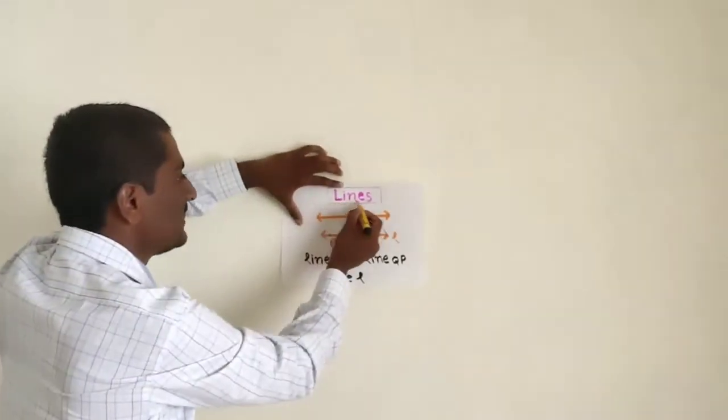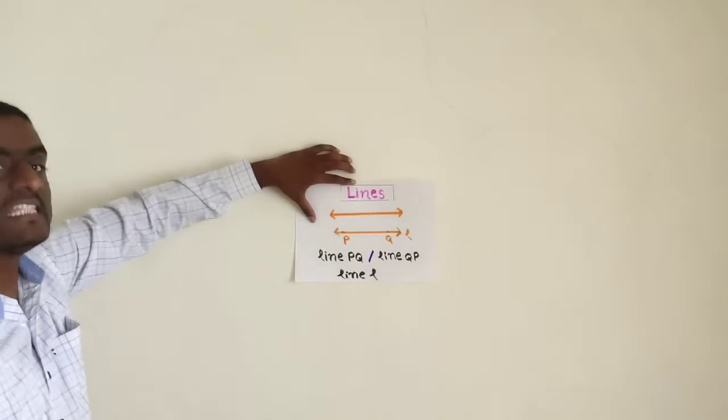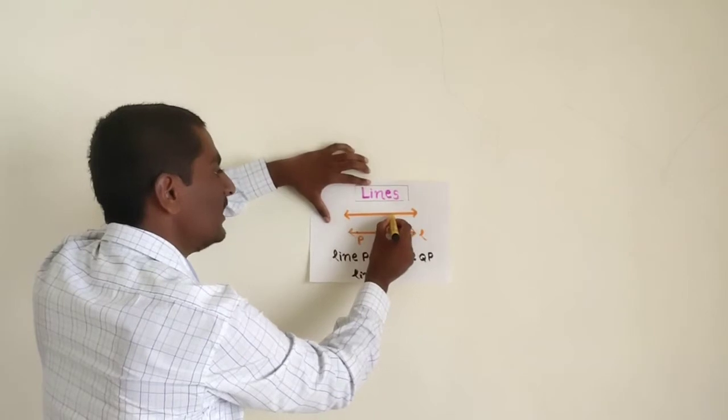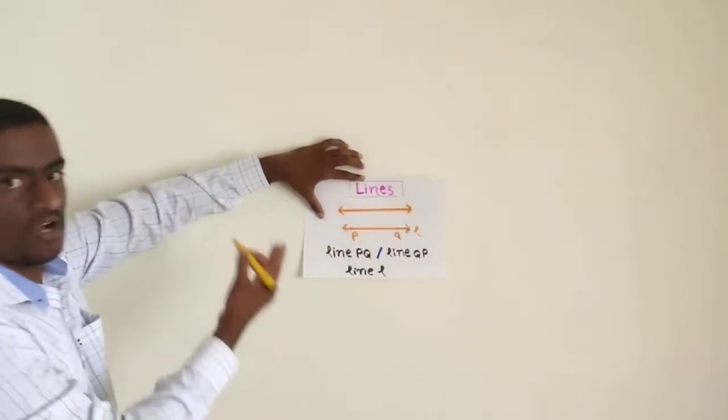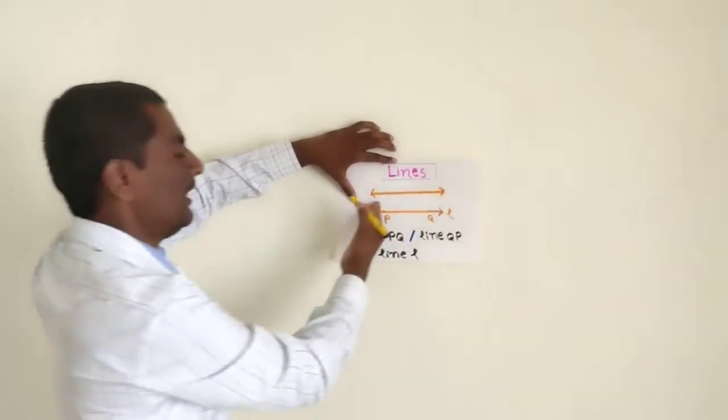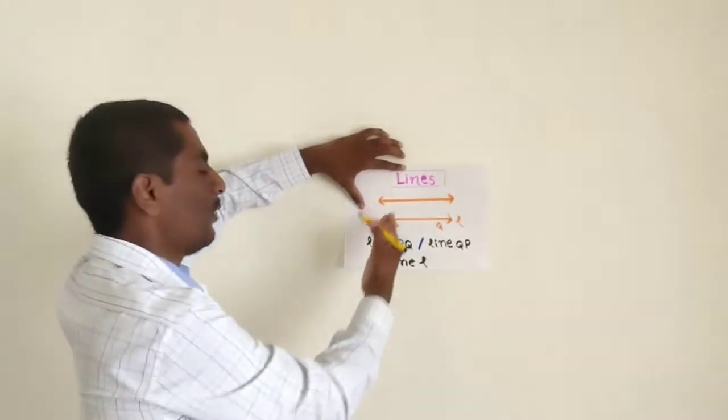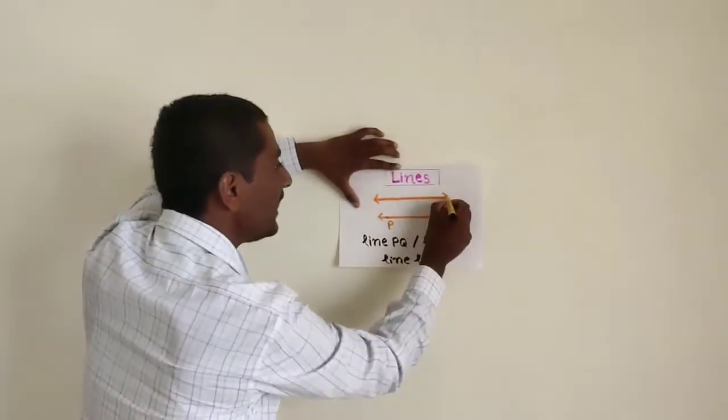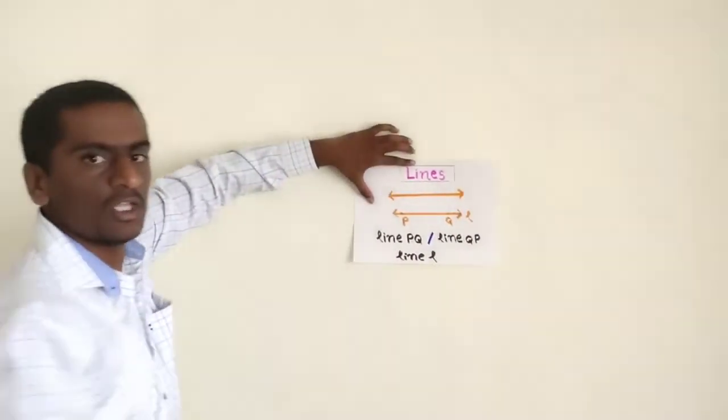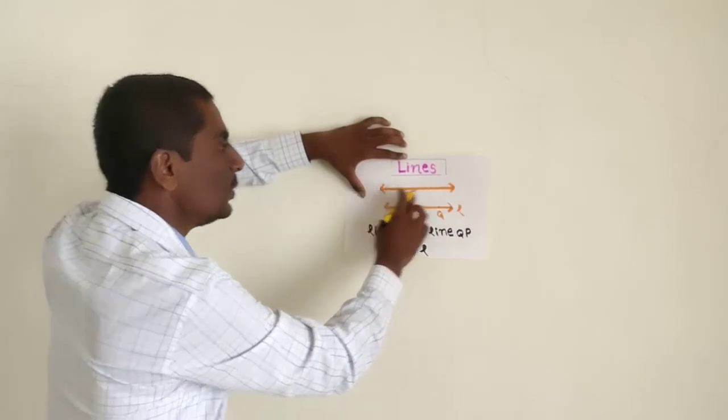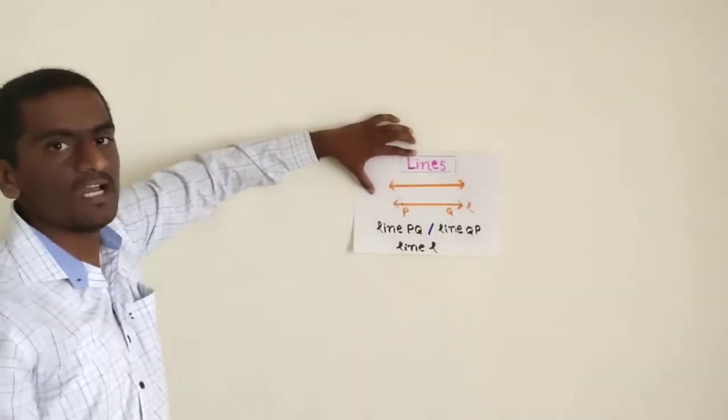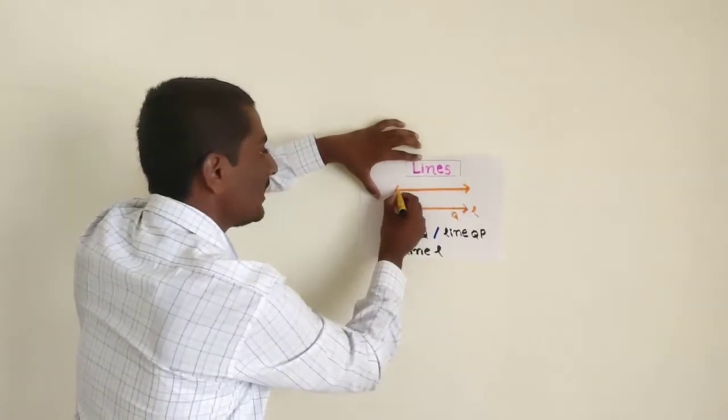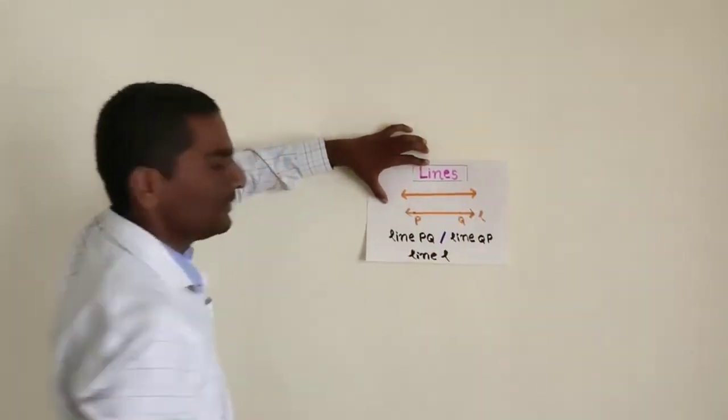Next basic concept is line. What is line? Line is unlimited at both ends.